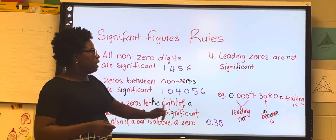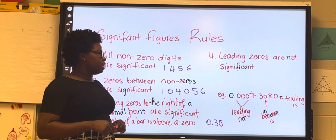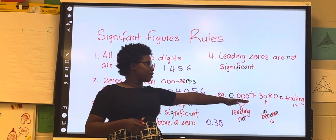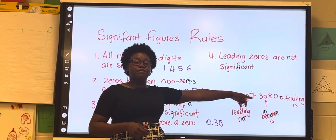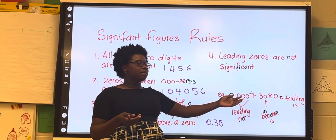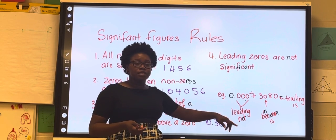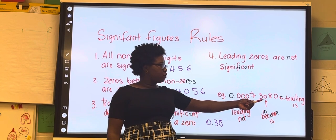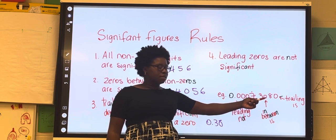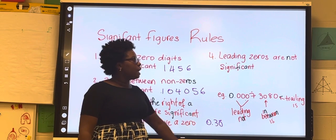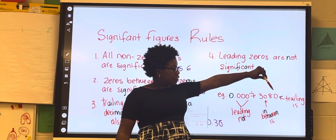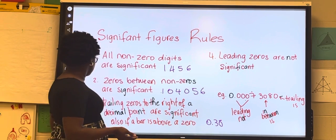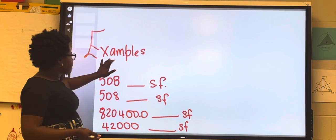Leading zeros are not significant. These are zeros that appear before your first significant number but after the decimal point. For example, those three zeros here are considered to be leading zeros and they are not significant. However, if you look at the zero between the three and the eight, that zero is considered significant. And the zero at the end of the number is considered a trailing zero, and that is also significant.